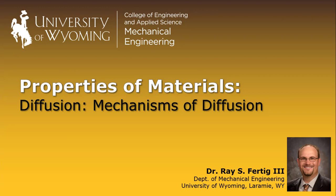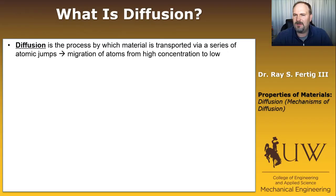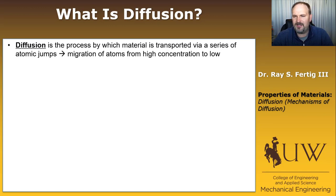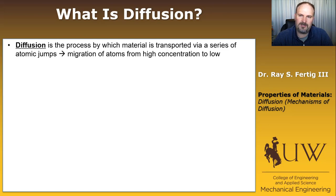In this lecture I want to begin the discussion of diffusion, starting by defining it and talking about some mechanisms. Diffusion is simply a process by which material is transported in a series of atomic jumps. It amounts to the migration of atoms from areas of high concentration to areas of low concentration.